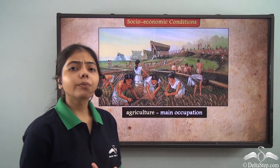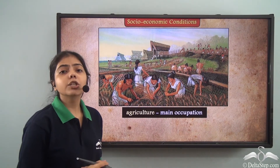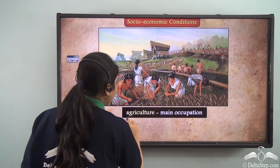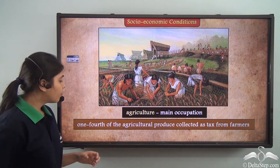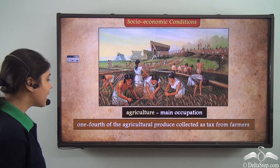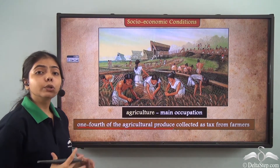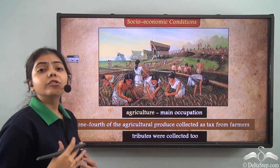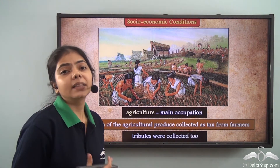The socio-economic conditions were quite suitable. Agriculture was the main occupation of the people. A tax officer collected taxes from farmers — one fourth of the agricultural produce. There were also certain tributes which farmers paid not on a regular schedule like taxes, but as willed by the king.